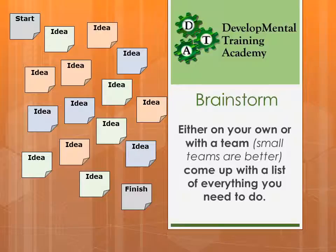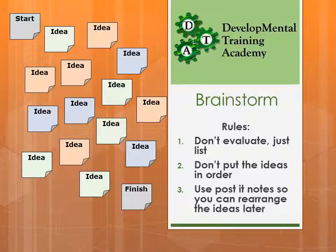It's useful to do this in a team because then really useful ideas aren't missed. You can certainly do it on your own. Come up with a list of everything that you want to do. There are three rules here for brainstorming. The first one is don't evaluate, just list the ideas. The second one is don't put the ideas in any particular order, and the third one is to use post-it notes so that you can rearrange the ideas later.